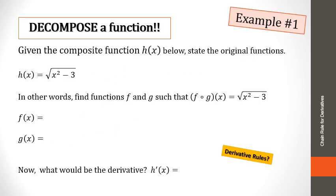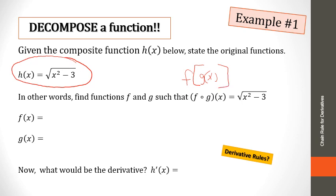Again we're looking at a composition of functions, but I want you to guess which one is the inside and which one is the outside. It says F of G of X, so G of X is the inside function and F of X is the outside function. Give yourself a minute and write down which one you think is the inside and outside. I think X squared minus three is the inside function and the square root is the outside function.